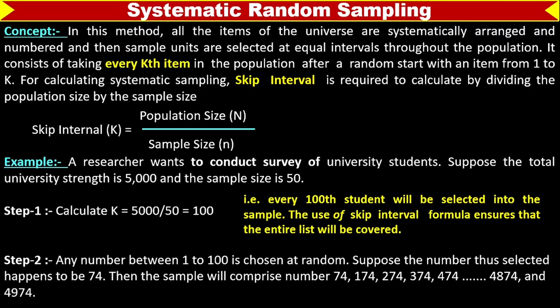Step 2: Any number between 1 to 100 is chosen at random. Suppose the number selected happens to be 74. Then the sample will comprise number 74, 174, 274, 374, 474, up to 4874 and 4974, up to the end of the list.